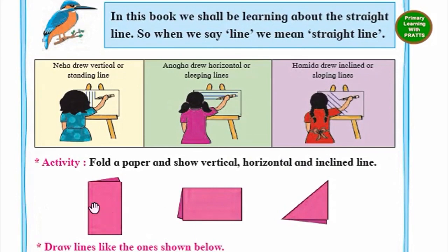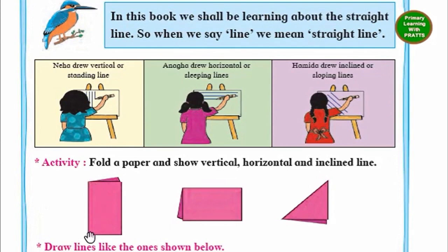Now the activity they've told us is very easy: fold a paper and show vertical, horizontal and inclined lines. You can take any sheet of paper you have at home. If you fold it once, you get a vertical line. If you keep it down like this, it becomes a horizontal line. And if you fold it along its corners, you will get an inclined line — a triangle. When you make a triangle out of the paper, you get an inclined line.